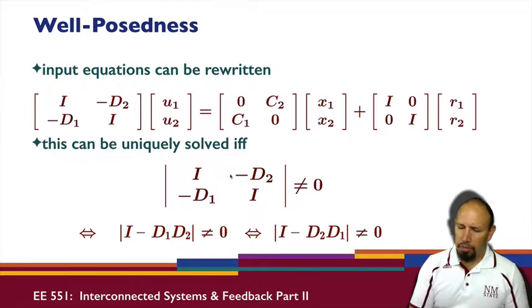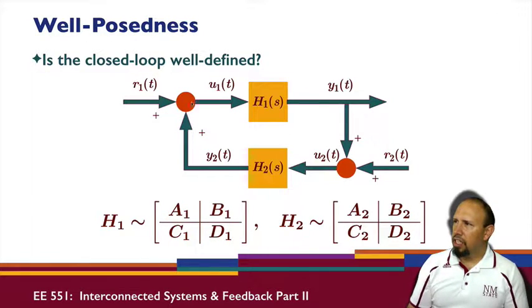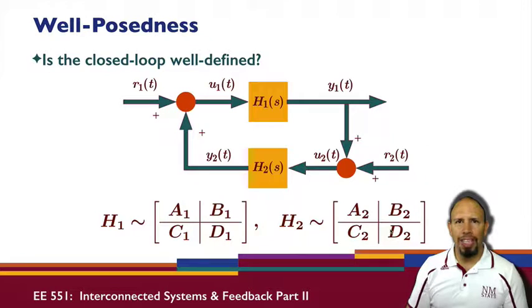So the issue here of all this, or the issue of well-posedness, is does this interaction make sense? That is, the fact that I have a D1 and a D2 here gives me what's called an algebraic loop. And Simulink will not even simulate a system like this with an algebraic loop. So that's definitely an issue.